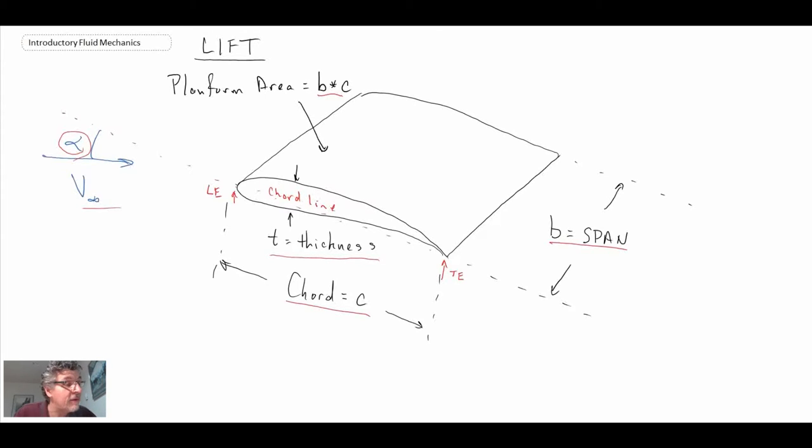So the net result of this, remember we said lift was always perpendicular to V infinity and drag was parallel with it. So what you're going to get out of this is you will have a lift force on this object and you will also have a drag force.